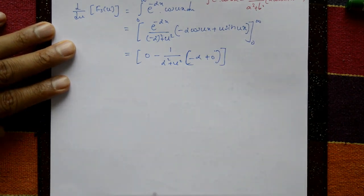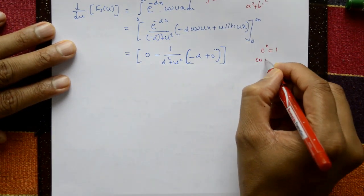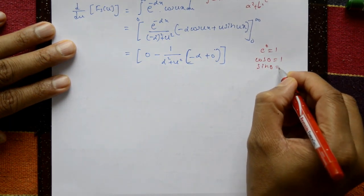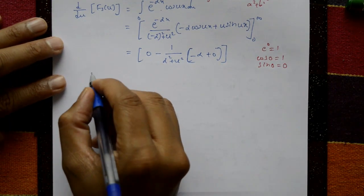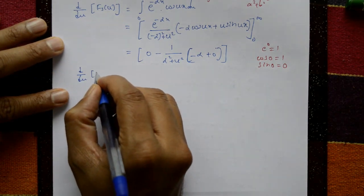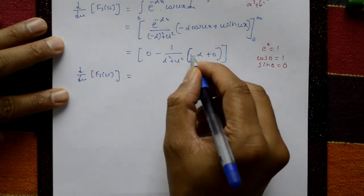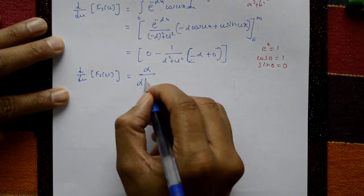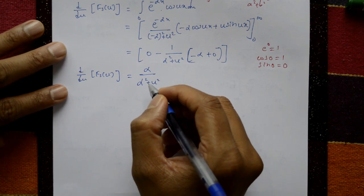So d by du of Fs(u) equals alpha over (alpha squared plus u squared).